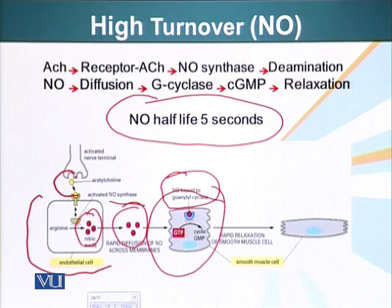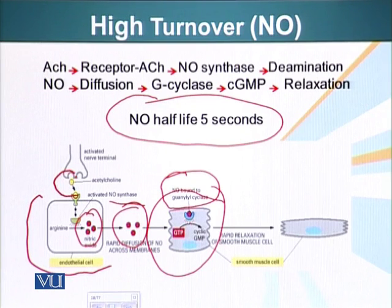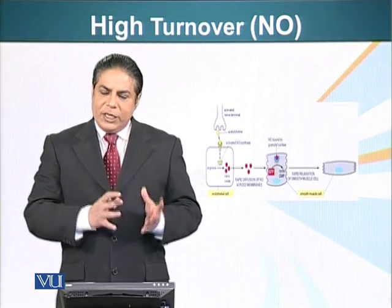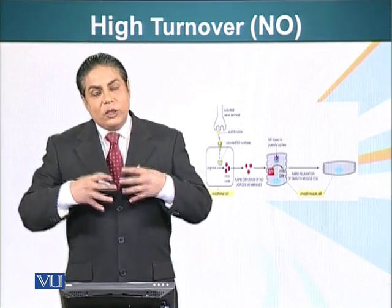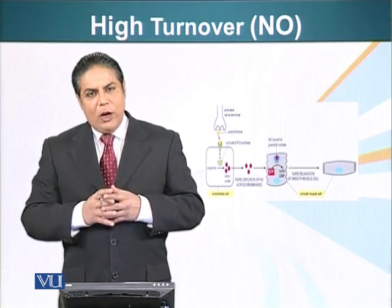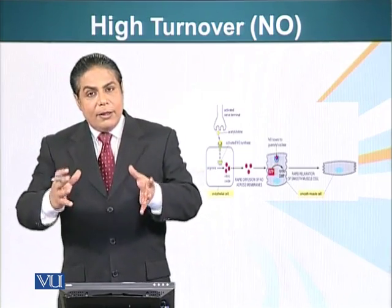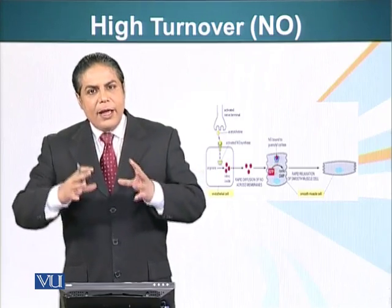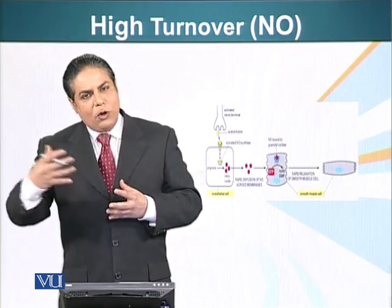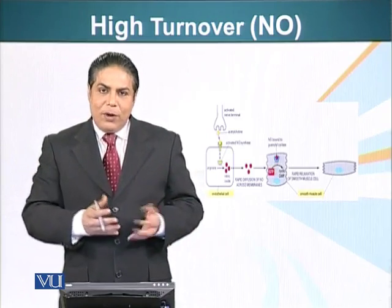Cyclic GMP is degraded by another enzyme, and that is the enzyme which is the target for a drug called sildenafil citrate, more commonly known as Viagra, which causes these cells to keep the cyclic GMP longer than they normally would without the drug. In the next module, we are going to see that there are certain signaling systems which produce a response very slowly — the response time is very long — but their effect is still present even after the signaling molecule has been removed from the system and is long gone.